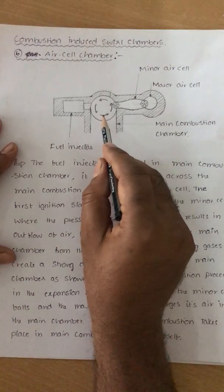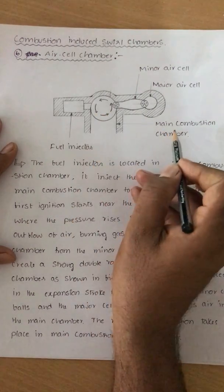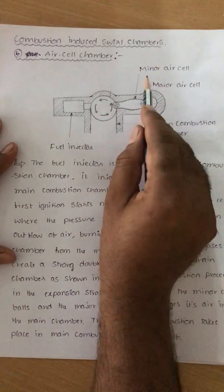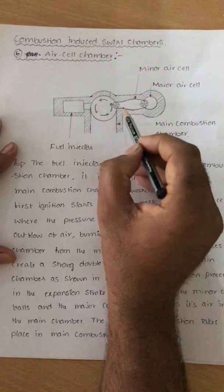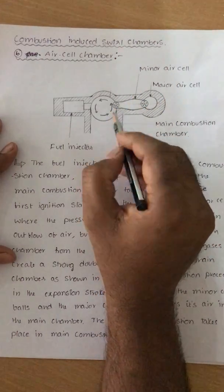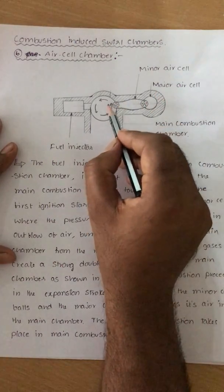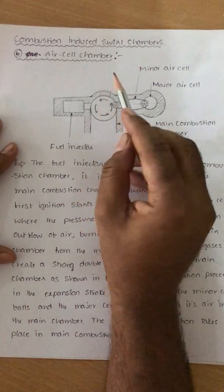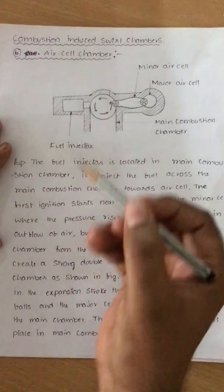Once combustion initiates and takes place, the piston starts to move downward during the expansion stroke. At that situation, the pressure in the minor cell is reduced. Once the pressure in the minor cell is reduced, the air which is in the major cell is also transferred through the orifices into the main combustion chamber and combustion is completed. That is how the air cell chamber works.